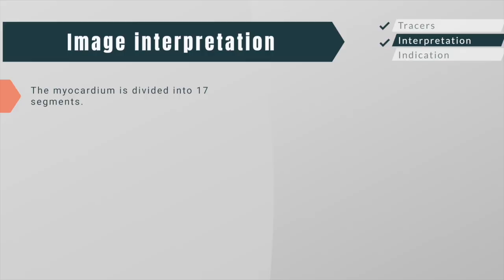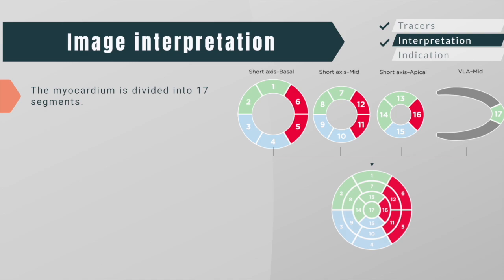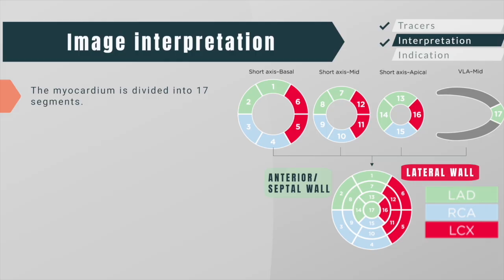The myocardium is divided into 17 segments, with segmental assignment based on three short axis and one long axis slice representing the entire left ventricle. The anterior and septal wall are supplied by the left anterior descending artery, the lateral wall is supplied by the left circumflex artery, and the inferior wall is supplied by the right coronary artery.